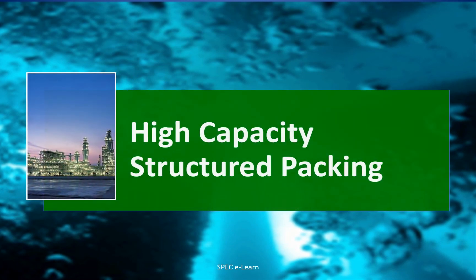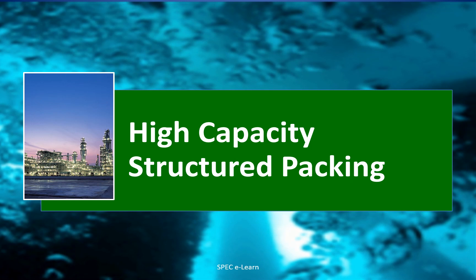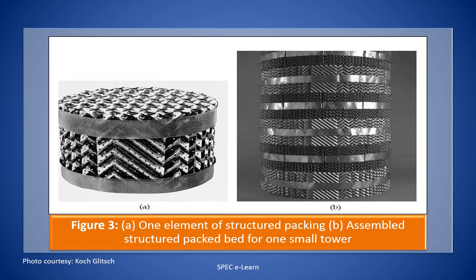High-capacity structured packing is an advanced packing technology. It is widely used in existing distillation columns in refineries and petrochemical plants as a solution to enhance column capacity during plant expansion. It is also used for new plant designs where column size and capital investment can be reduced. The packing is manufactured as a single layer or element, and depending on the required packing height, several such layers are assembled and placed in the column bed.